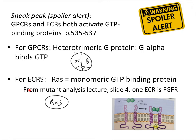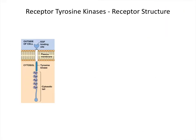Secondly, from the mutant analysis lecture, we talked a bit about enzyme-coupled receptors — in particular, a dominant negative receptor mutation. The example I gave was the FGF receptor, one example of an enzyme-coupled receptor. This slide may look familiar because it's slide four from that lecture. Our token enzyme-coupled receptor is the receptor tyrosine kinase, or RTK.